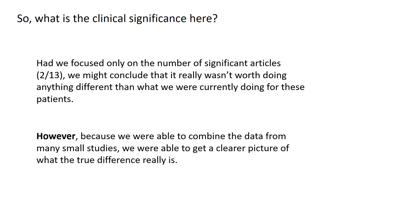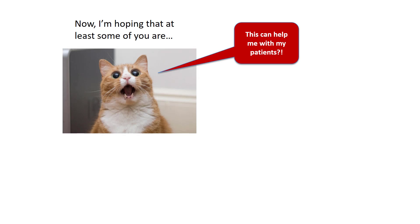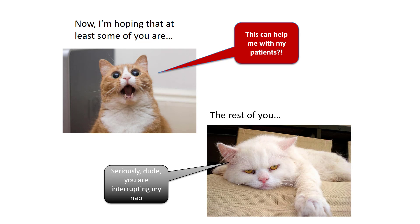We see that across the studies, the lifestyle intervention resulted in an average of just about two BMI points lower than standard care. What's the clinical significance here? Because we were able to combine the data from many small studies, we get a clearer picture of what the true difference really is. Only a two-point BMI difference, you say? Well, for a six-foot male, that translates into just about 20 pounds. I'm hoping at least some of you are thinking, wow, this can help me with my patients.